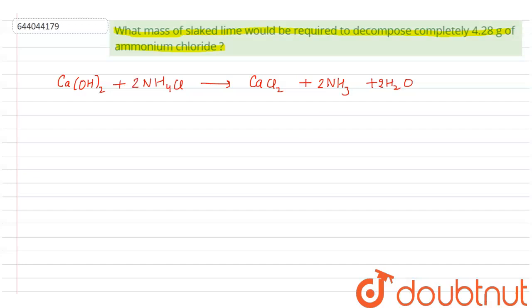So we have to calculate what mass of slaked lime is required to completely decompose 4.28 grams of ammonium chloride. First of all we'll calculate the molar masses of all the compounds given in the reaction. For calcium hydroxide, that is slaked lime, the molar mass will be calcium is 40 plus hydroxide, there is a 2 outside, so for oxygen it is 16 and for hydrogen it is 1, so this comes out to be 74 grams.